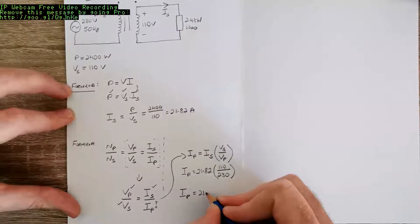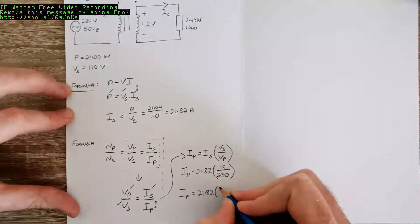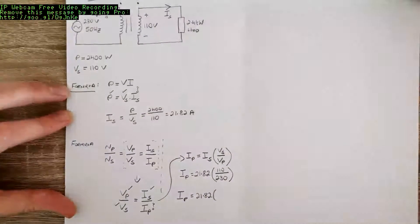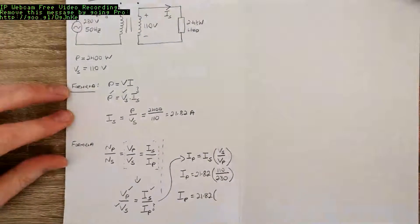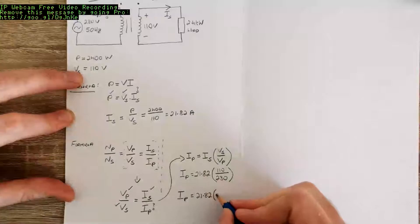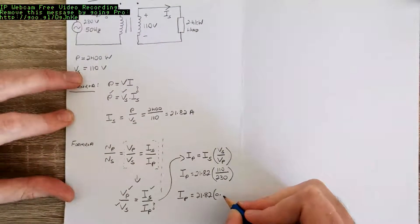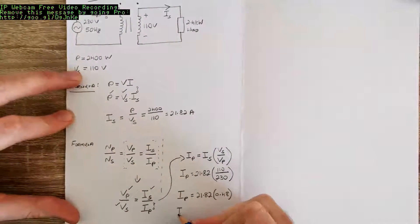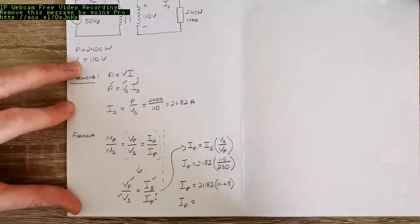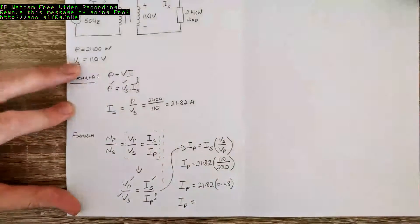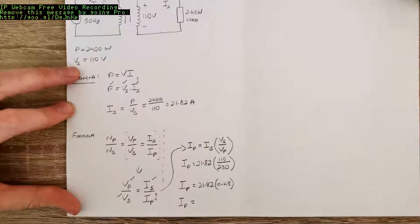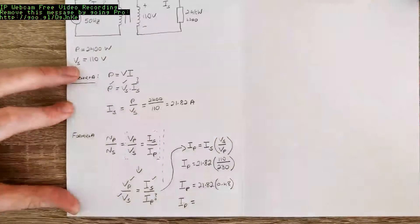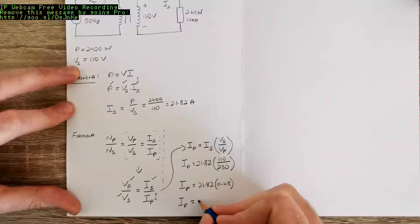Putting this into the calculator: 21.82 times 110 over 230 gives 0.48 as the ratio, which means our primary current is equal to 10.45 amps.